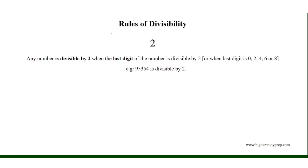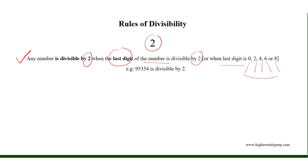Rules of divisibility. Any number is divisible by 2 when the last digit of the number is divisible by 2, or when the last digit is 0, 2, 4, 6, or 8. All of these are divisible by 2. For example, the number 95354 is divisible by 2 because the last digit of the number is 4, which is divisible by 2.